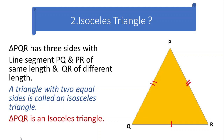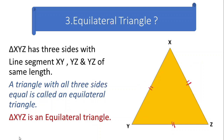Next is the isosceles triangle. In an isosceles triangle, a pair of sides will have the same length — that is, out of 3 sides, two will have the same length. For example, in triangle PQR, PQ and PR both have a length of 5 cm, and QR has a different length of 4 cm. After that, we have an equilateral triangle. In an equilateral triangle, all three sides are of the same length.